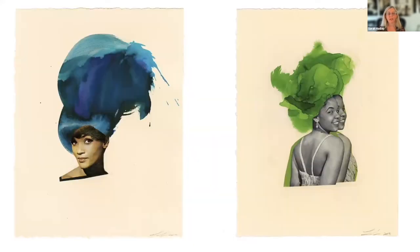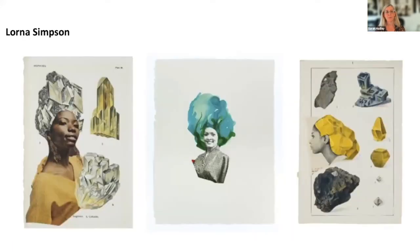Throughout Simpson's practice, the language of hair has played an important role. In around 2010, she juxtaposed models' heads with swirls of ink to replace their missing hairdos. She uses advertisements from historical copies of Ebony and Jet — the monthly magazines she grew up reading — that informed her sense of thinking about being Black in America. What I really love about these is that they're so simple, which can be really challenging in collage, and yet they're stunning. She then made a series called 'Earth and Sky' in which she interleaved found pages from a mineralogical encyclopedia as the hair.